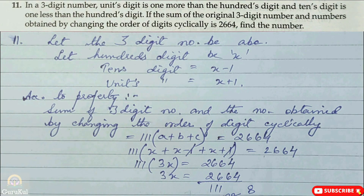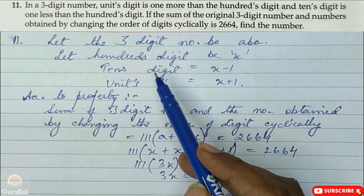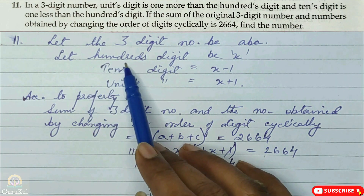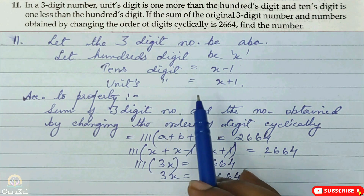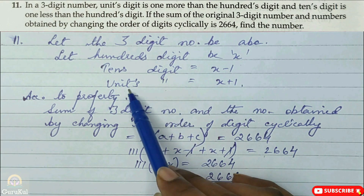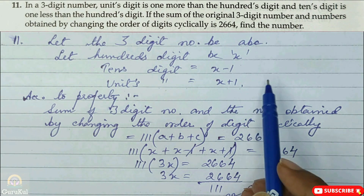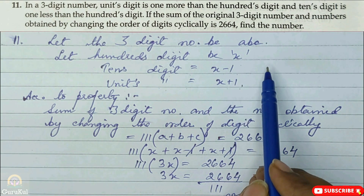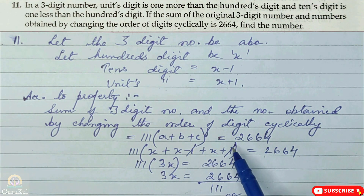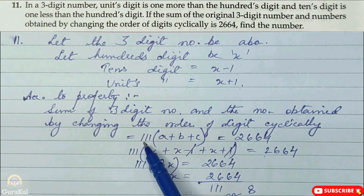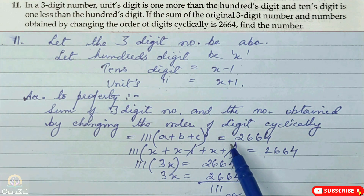Question number 11: in a three-digit number, let the three-digit number be A, B, C. The unit digit is 1 more than the 100th digit. Let the 100th digit be X. Then unit digit = X plus 1, and the 10th digit is 1 less than the 100th digit, so 10th digit = X minus 1. According to the property, the sum of a three-digit number and the numbers obtained by changing the order of digits cyclically equals 111(A plus B plus C).